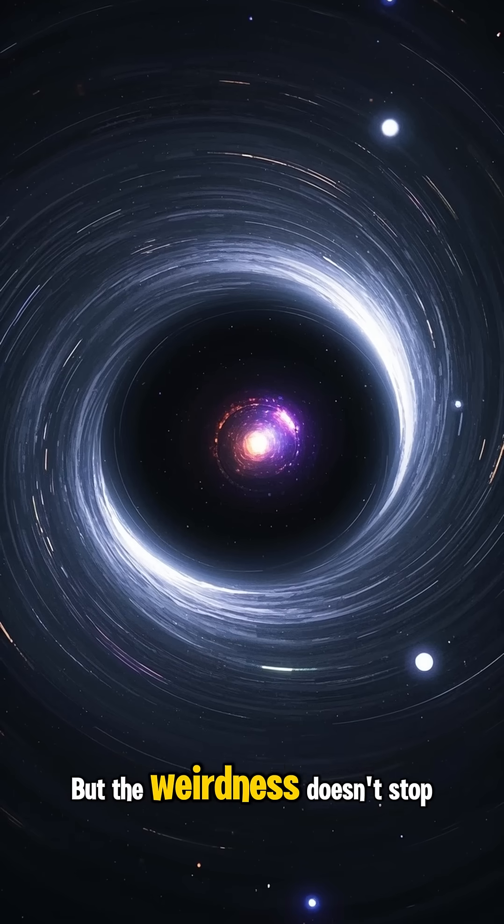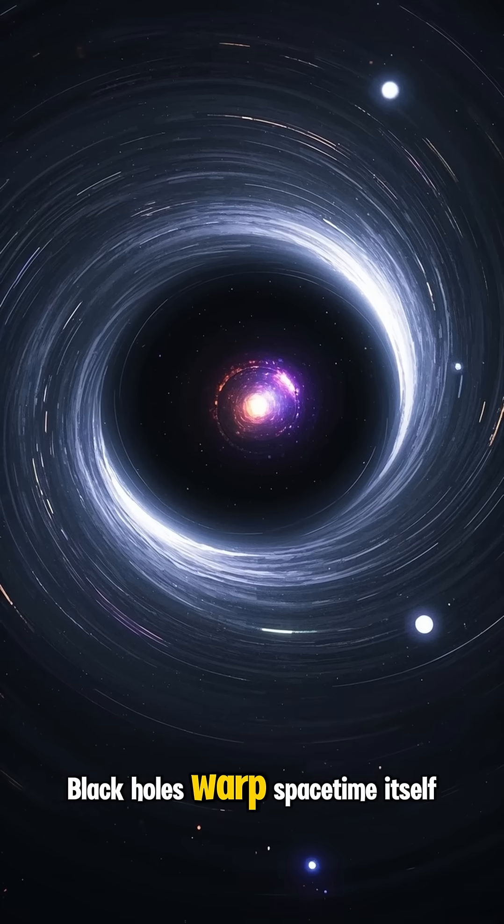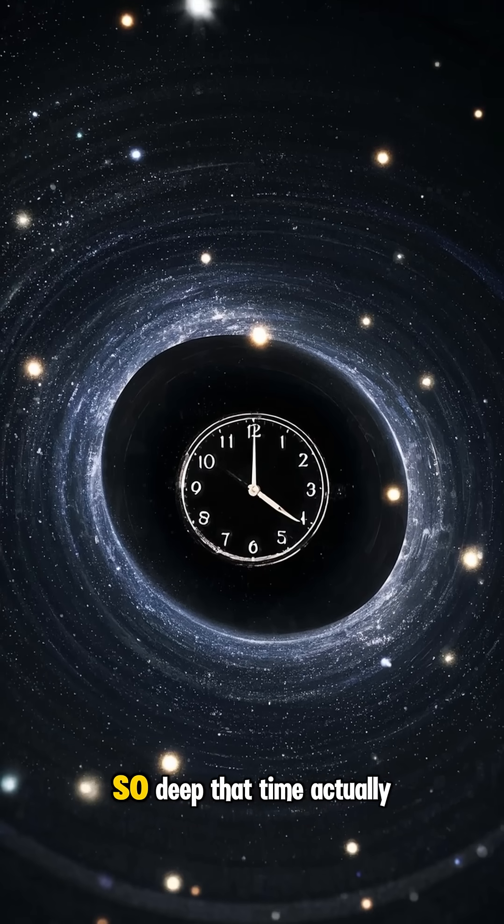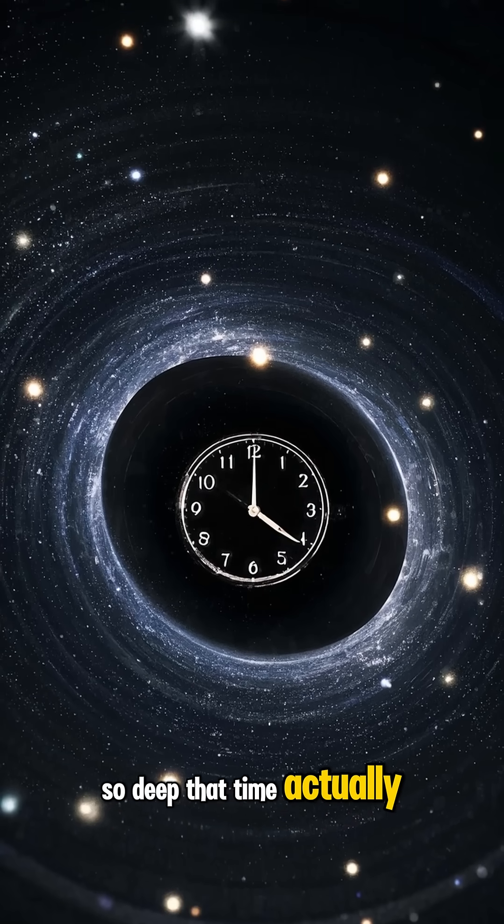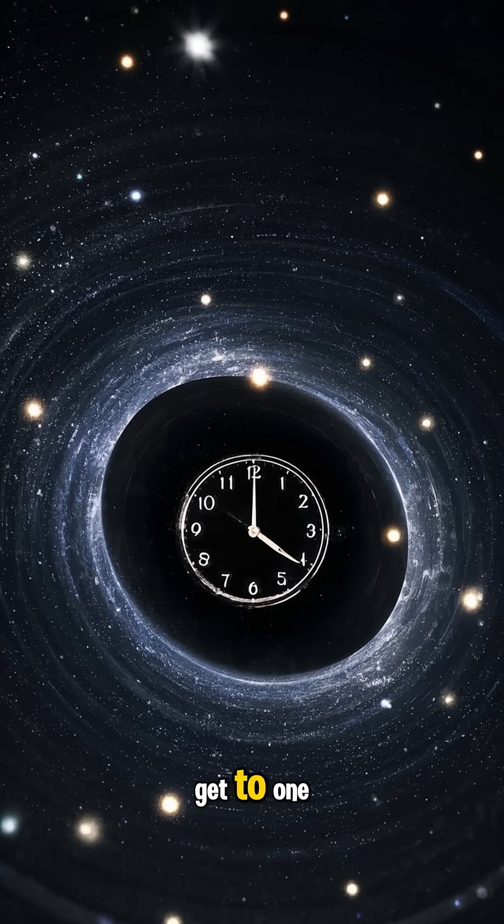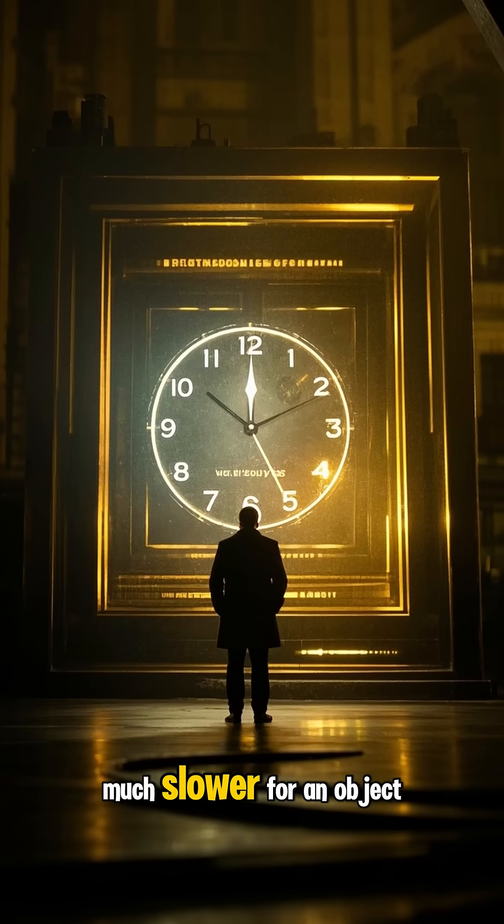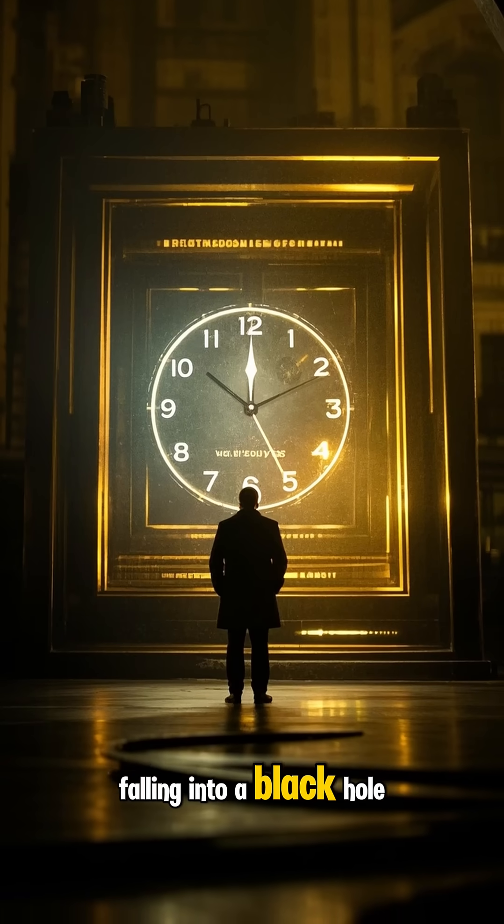But the weirdness doesn't stop there. Black holes warp space-time itself. They create gravitational wells so deep that time actually slows down the closer you get to one. For someone watching from a safe distance, time would appear to pass much slower for an object falling into a black hole.